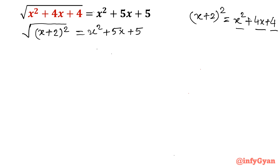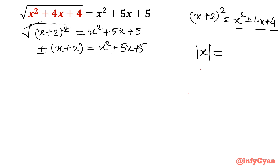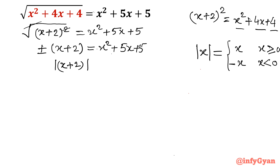Now I can see the square root and the square will get cancelled out. But square root of anything gives us a plus or minus sign, equal to x² + 5x + 5. One function is called the mod x function or absolute value function. Mod x equals x when x is positive or zero, and minus x when x is negative. So that plus and minus sign reflects that we can write this as modulus of (x + 2) = x² + 5x + 5.